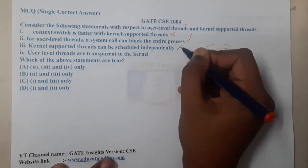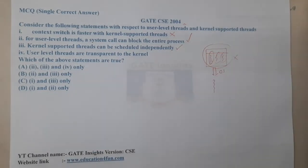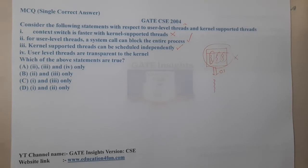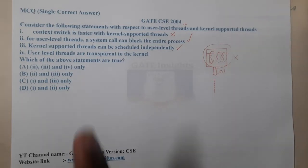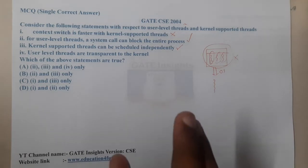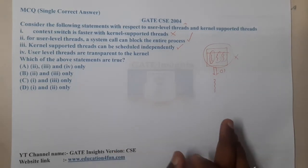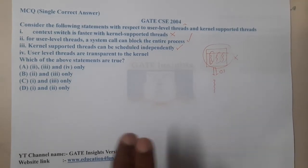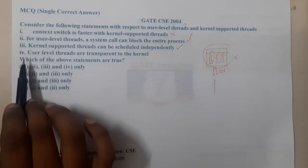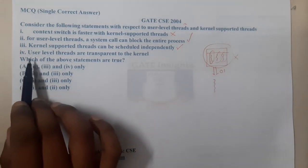Moving on to kernel-level threads: kernel-supported threads can be scheduled independently — that is absolutely true. This is one of the advantages of kernel-level threads. When you have multiple kernel-level threads, you can apply scheduling policies like priority-based scheduling individually to each of them.